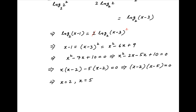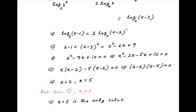But we know from condition 1 that x must be greater than 3. Therefore, x equals 2 is ruled out, and x equals 5 is the only solution to the given equation, which is the required answer.